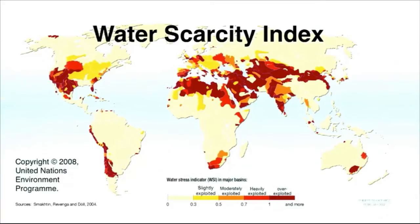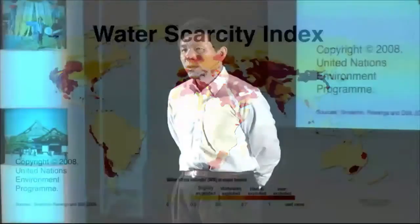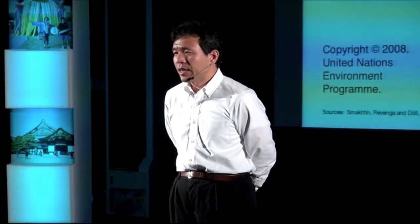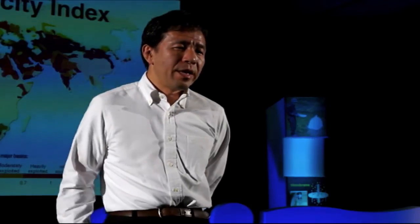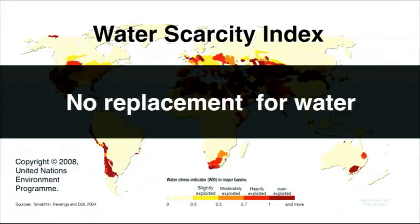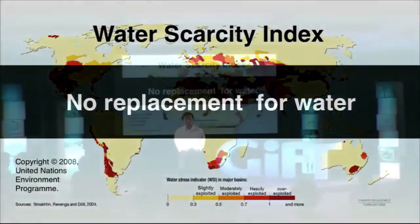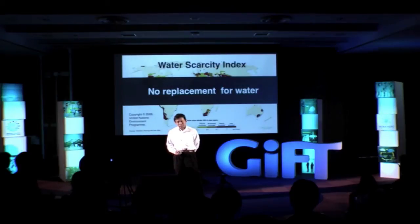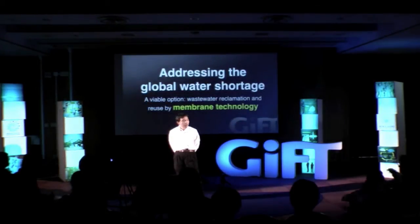Here you can see the water scarcity index prepared by the United Nations. In this slide, dark color indicates areas suffering from serious water shortage. As you can see, water shortage is really serious all over the world. We sometimes forget the importance of water — we cannot imagine our life without it, and we need a huge amount of water for industry and agriculture. Unfortunately, there is no replacement for water. According to one pessimistic expectation, water may become more valuable than oil in the near future. So we need to do something to address this global water shortage.